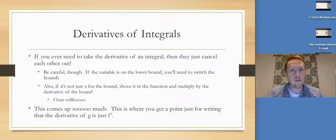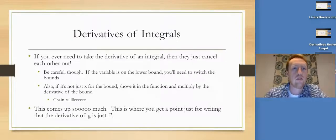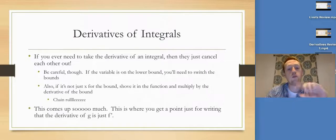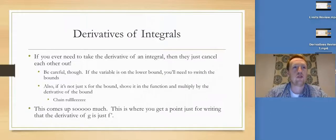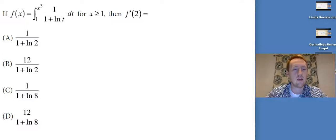Derivatives of integrals come up all the time on the test — this is that thing where you get a free point just for writing g prime equals f. Remember: the derivative of an integral is just plugging the variable into the function, since differentiation and anti-differentiation cancel. If the variable is on the lower bound, switch the bounds and multiply by negative one. If the upper bound is not just x — like x-cubed or sine of x — multiply by the derivative of that bound via the chain rule.